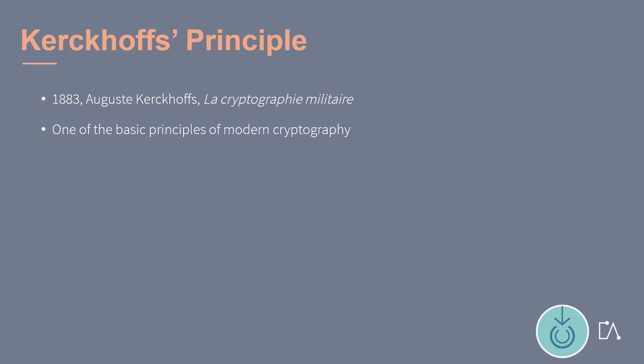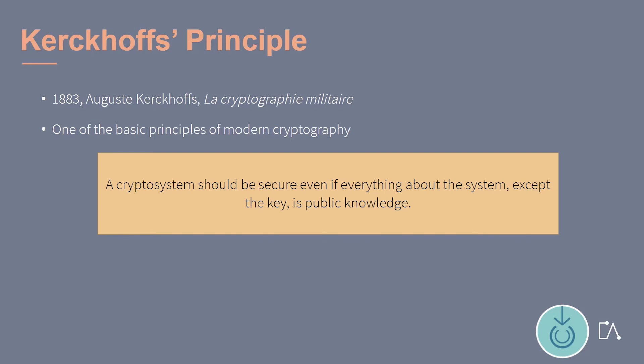It states that a crypto system should be secure, even if everything about the system, except the key, is public knowledge. As we will see, not all classic techniques such as the Caesar Cipher, for instance, adhere to this principle.